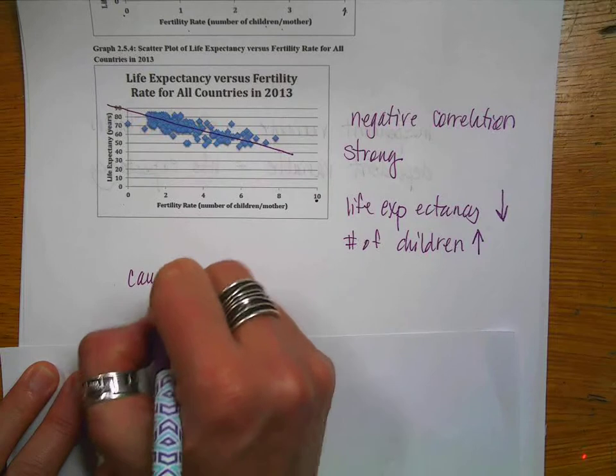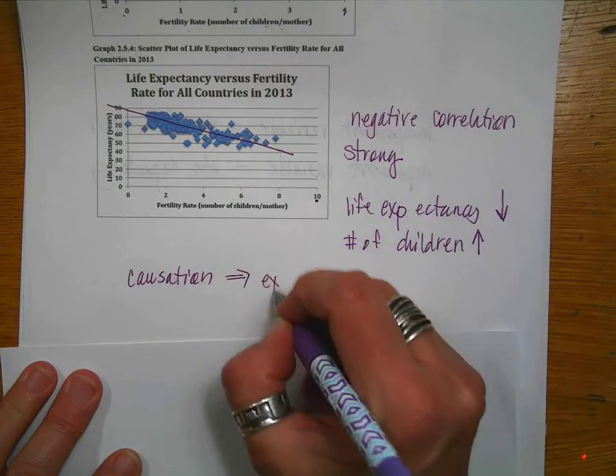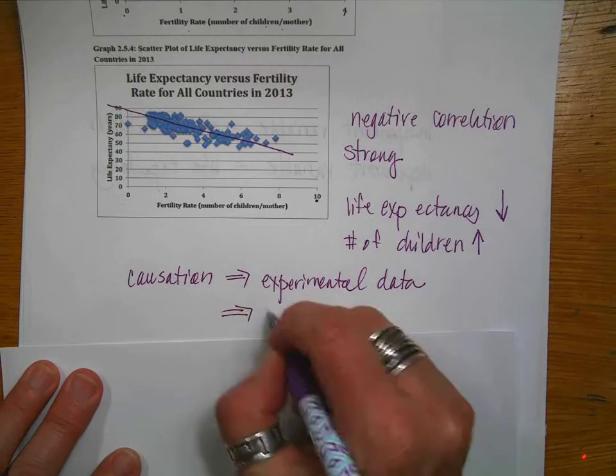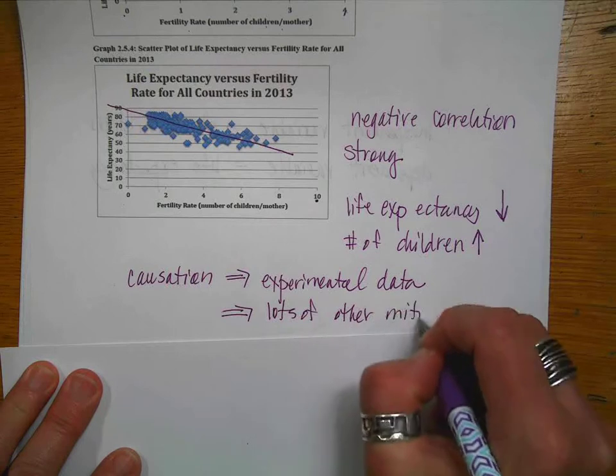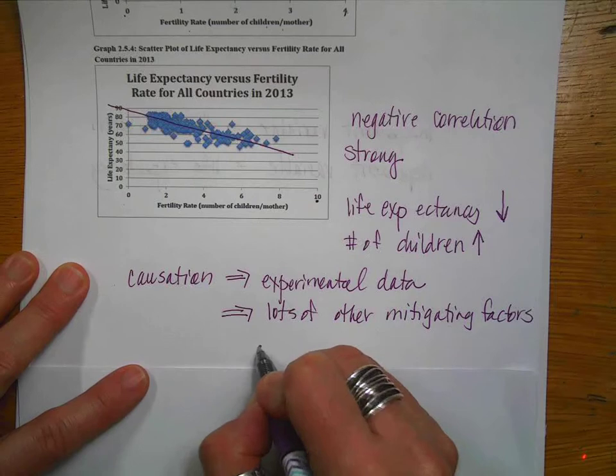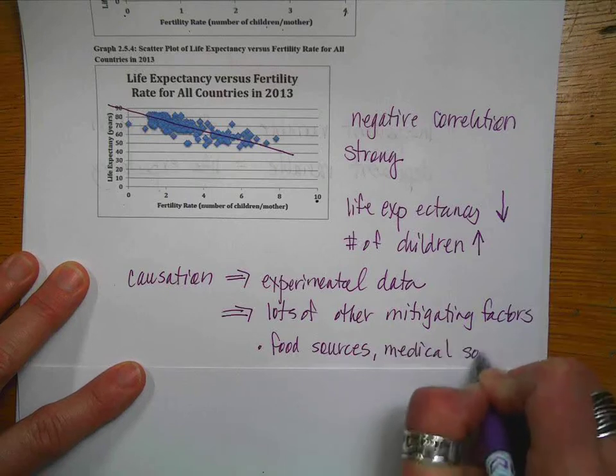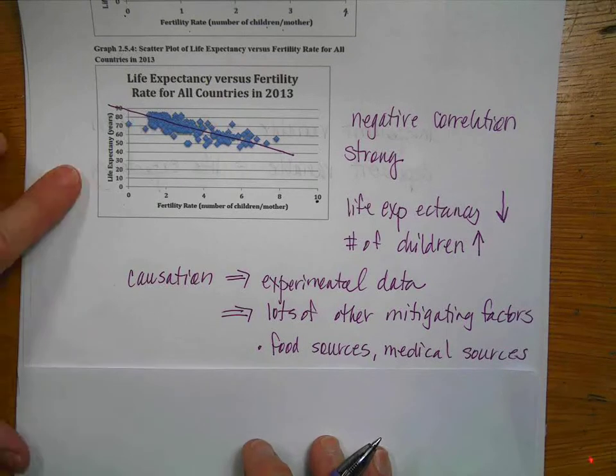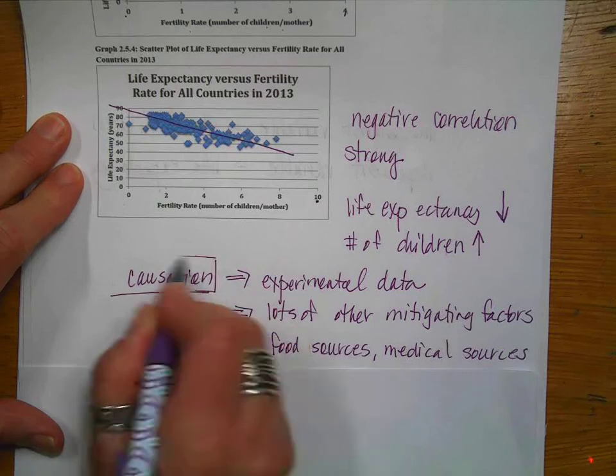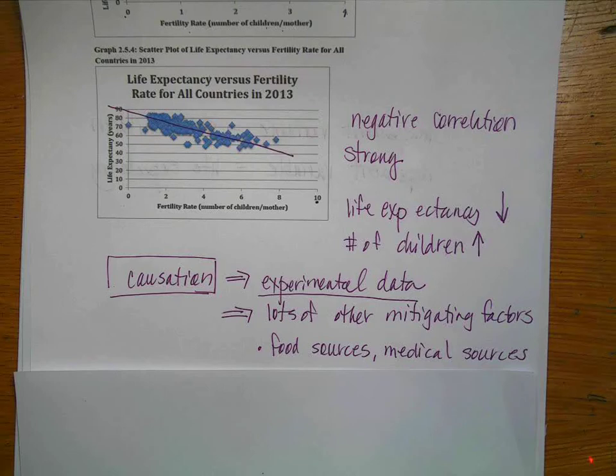But again, this is where we want to be careful about making inferences about causation. Does the number of children mean that I'm not going to live as long? Maybe, maybe not. And so we would have to do some experimental data to be able to prove that point. Remember that there could be lots of other mitigating factors, meaning that it's not necessarily about the number of children that you have. It could be about food sources. It could be about medical sources. So there's lots of things that could determine a decrease in life expectancy that may or may not be related to the number of children that you have. So remember that causation is really hard to show and to be able to show that I would want to have some experimental data.